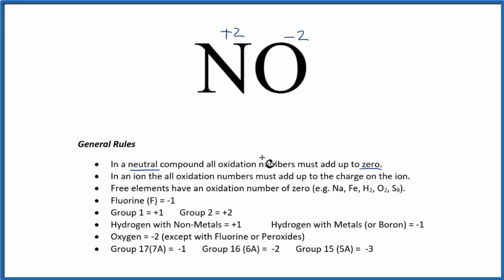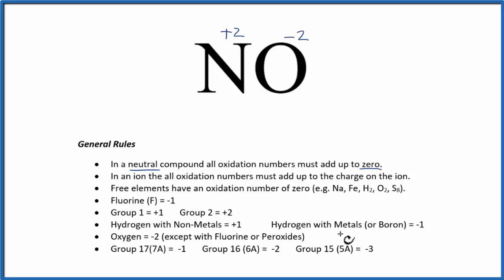Our general strategy for finding oxidation numbers is to find the oxidation number for the one we know — the one we can find in our list — and use that to find the oxidation number for the other element. You might note that nitrogen is in group 15 or 5A, and it should have a minus three oxidation number. But if there's a conflict between two rules, we use the one that's higher in the list — in this case, oxygen.